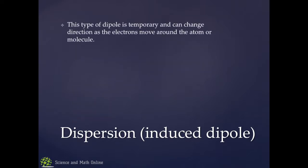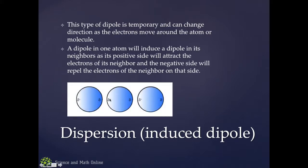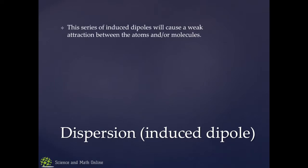This type of dipole is temporary, and it can change direction as the electrons move around the molecule. However, the dipole in one atom will induce a similar dipole in its neighbors, because the positive side is going to attract the electrons in its neighbor, and the negative side is going to push them away. You end up getting similar dipoles occurring across neighbors, and then a slight attraction between positive and negative poles between them, creating a weak attraction.